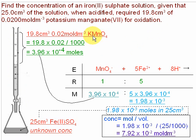And that would mean that in the bottom, that's where we had the iron-sulfate solution, and it was 25 cm³. We want to find the concentration, so that's an unknown concentration.